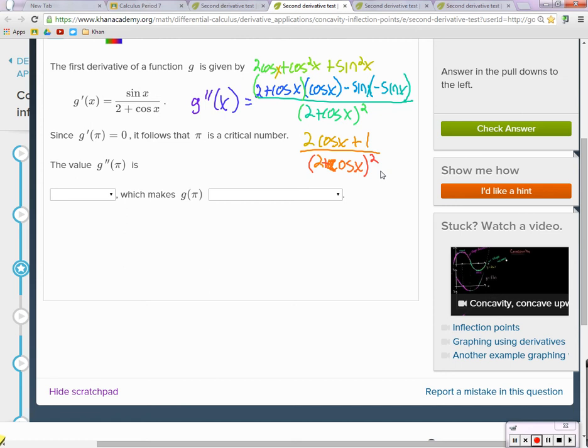What's really being asked is the value of g double prime of pi: is it negative, positive, or equal to zero? Just plug pi in here. What's the cosine of pi? Negative 1. So negative 2 plus 1 over 2 plus negative 1 squared.